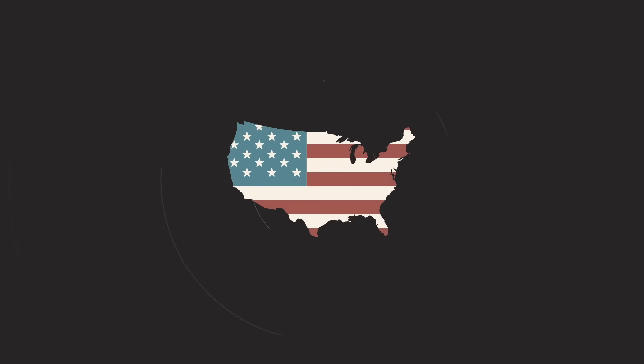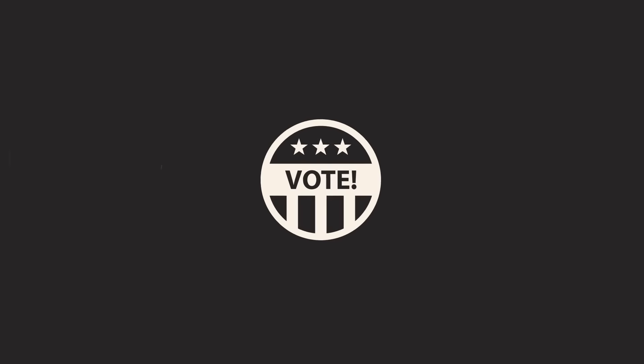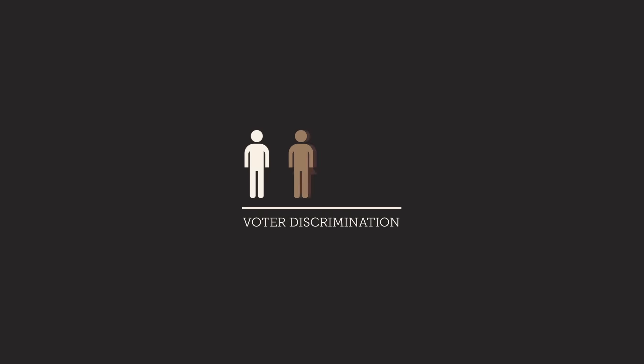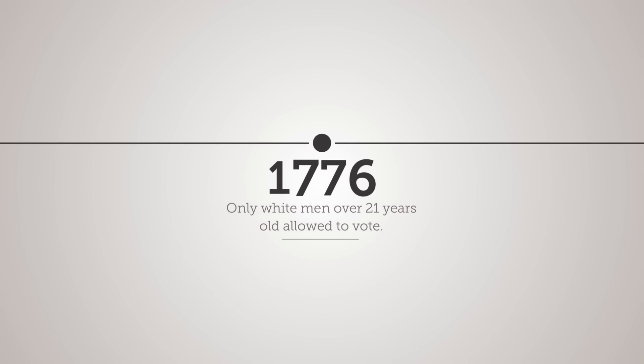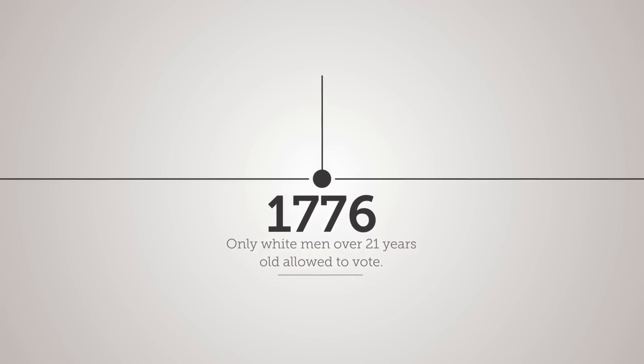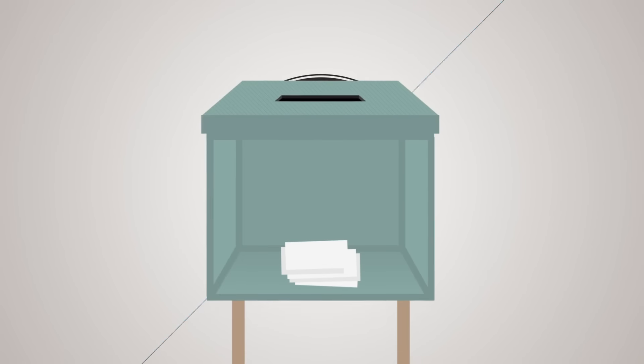In the course of history in the United States, the right to vote has been subject to many changes. Voter discrimination took many forms – race, color, sex, age. When this country was formed in 1776, only white men over the age of 21 had the right to vote.